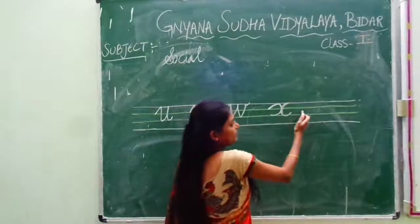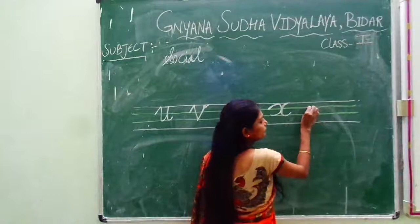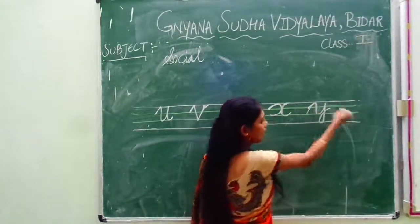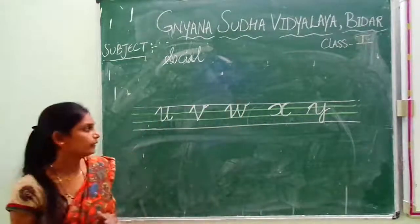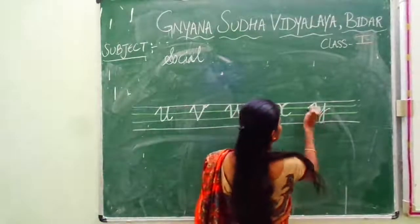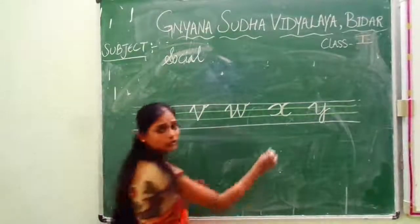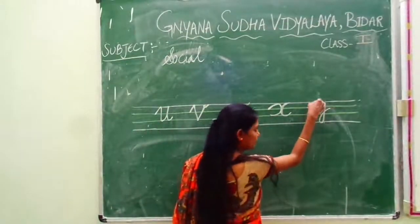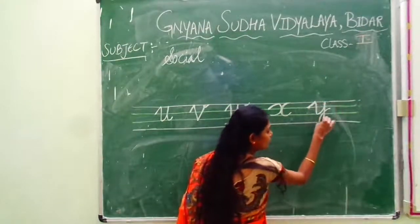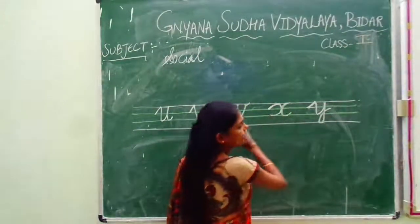Now leave some space and write Y. How to write capital Y — like a stool. See, start with blue line, touch pink line, come down, and do this, again touch pink line, come down and touch down, pink line, then go up. This is called Y.